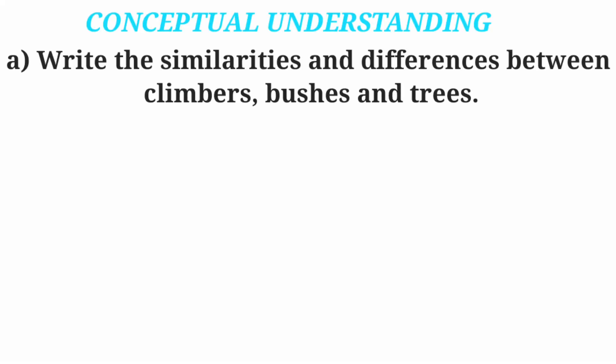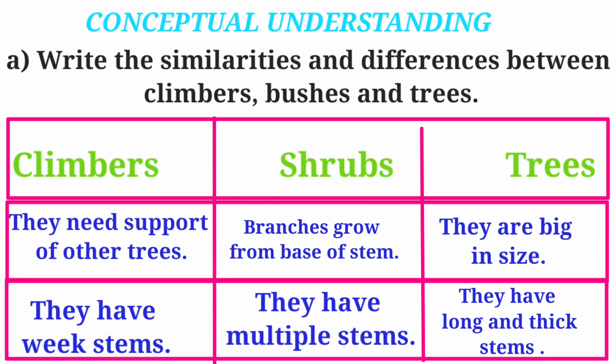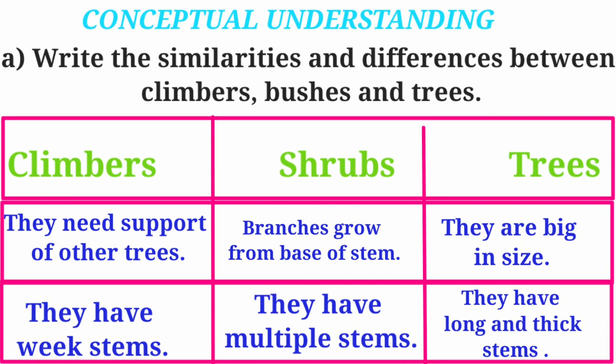Conceptual Understanding Question A. Write the similarities and differences between climbers, bushes and trees. Climbers need support of other trees and they have weak stems. Shrubs have branches that grow from the base of the stem and they have multiple stems. Trees are big in size and have long and thick stems.